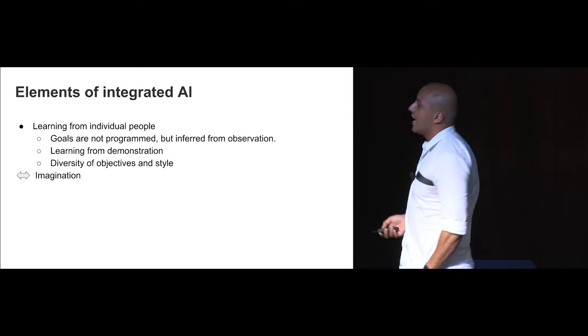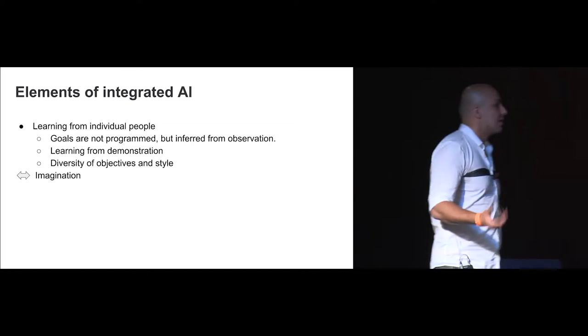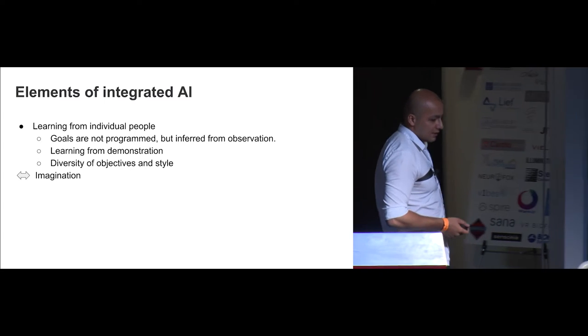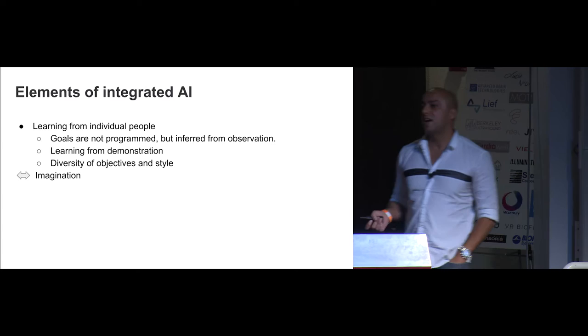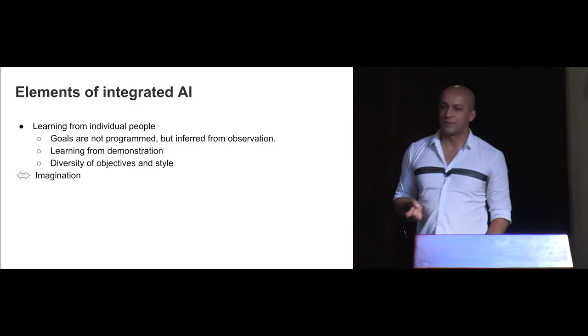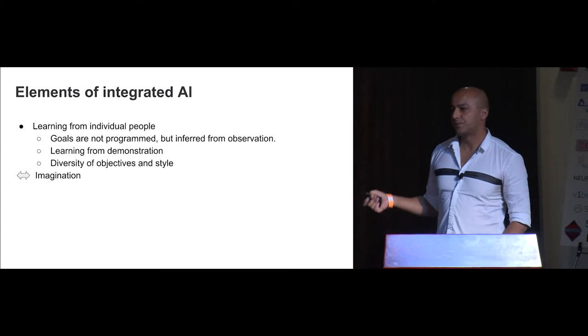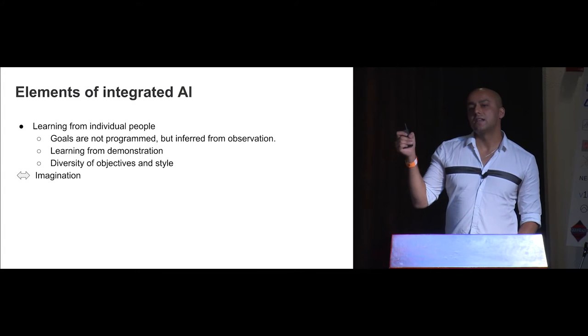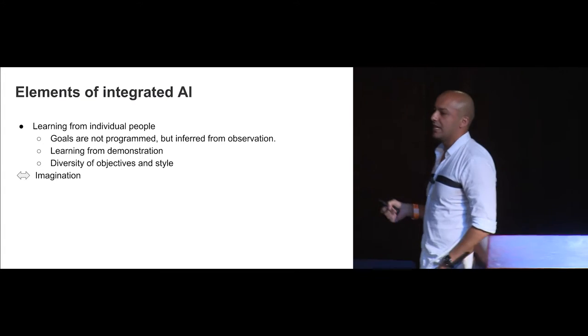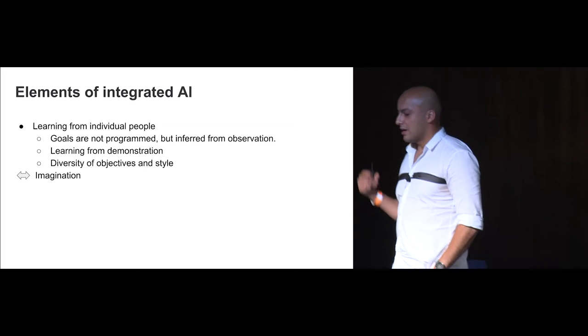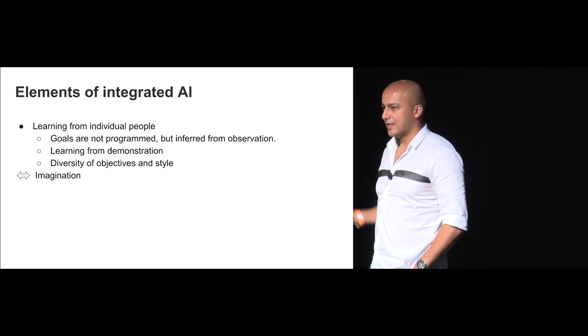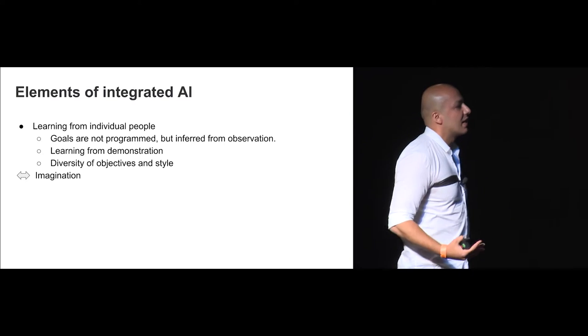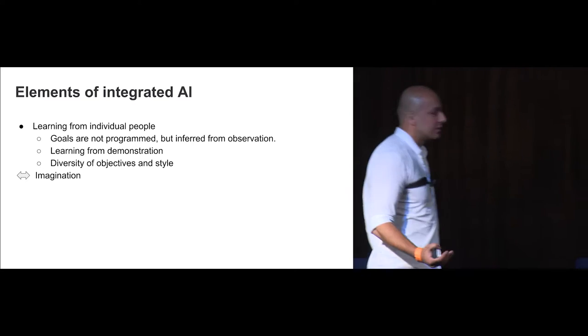So what are the elements of integrated AI, now that we know what AI is? Well, the idea here is that we want AI to learn from people, from every individual. It's not taking the average of all of you. It is learning something from each one of you, being personal. So it doesn't have its own goals. It doesn't have its own objective. It's not trying to do its own thing. It's trying to learn what you want.